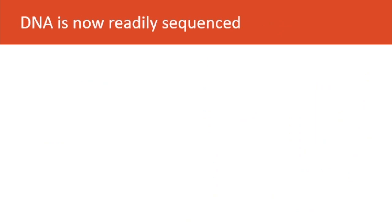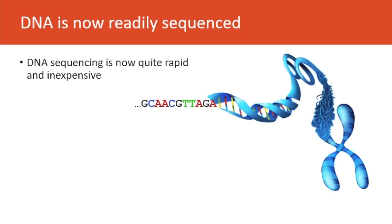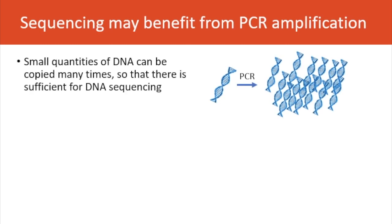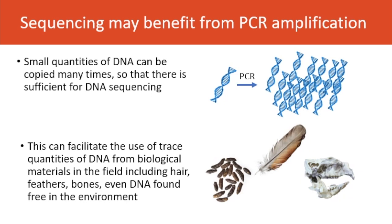Through development of technologies, DNA is now readily sequenced — quite rapid and quite inexpensive. DNA sequencing may benefit from PCR amplification, a process by which small quantities of DNA can be copied many times so that they're sufficient for sequencing. This can facilitate the use of tiny quantities of DNA from biological materials found in the field, such as hair, feathers, bones, and even DNA found free in the environment.